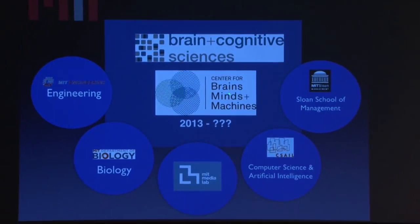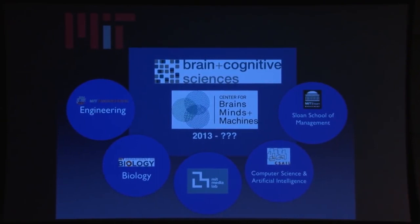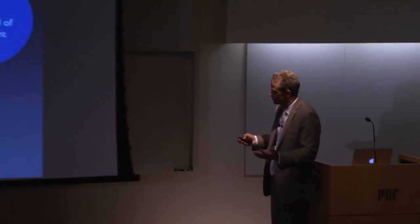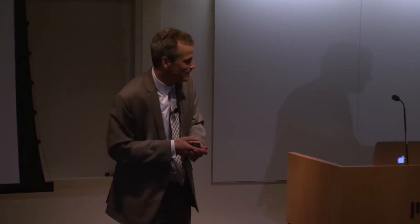In the Brain and Cognitive Sciences Department, we are organized in something called the Center for Brains, Minds, and Machines, led by Tommy Poggio. This is an NSF-funded center to fuel work in this general area — one of the most interesting areas drawing students and grad students to our department. We have partnerships across computer science, artificial intelligence, the media lab, and engineering. It's funded by NSF for at least another five years, and what its future will look like beyond that is something we're hopeful about.